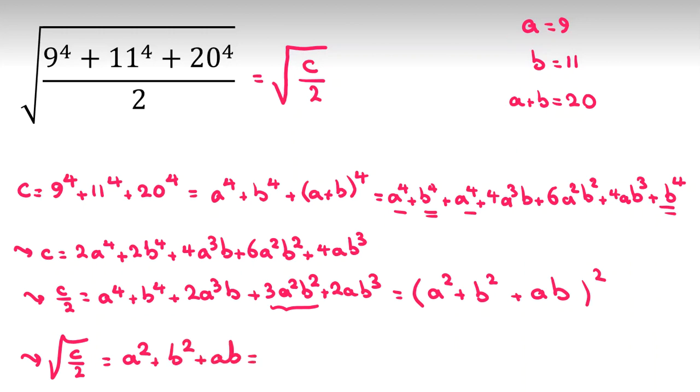A squared is what? Replace A with 9, B with 11. 11 squared plus AB, which will be 9 times 11. 9 squared is 81. 11 squared is 121 plus 99. 99 plus 81 is 180. We have 121 plus 180 equals 301.